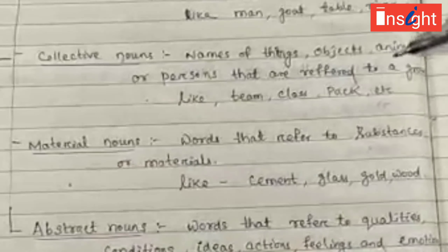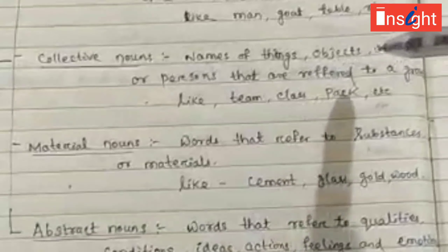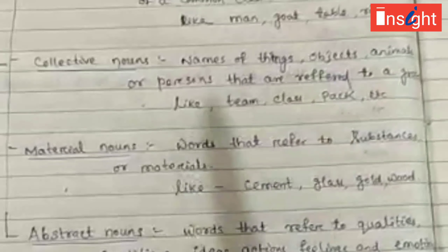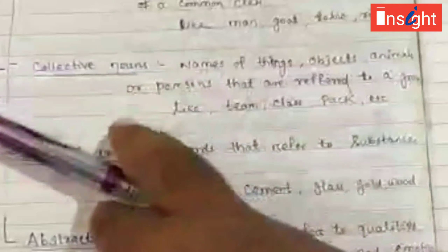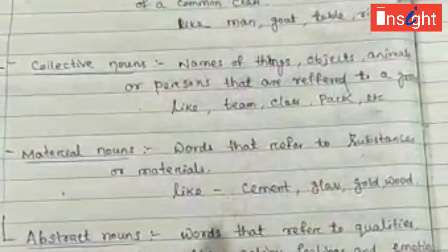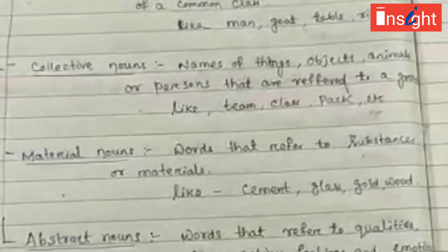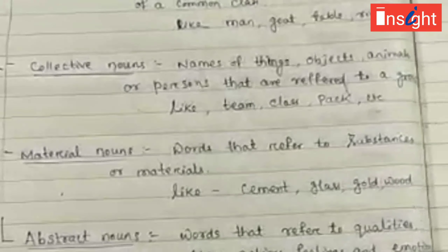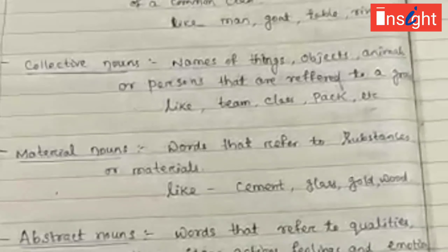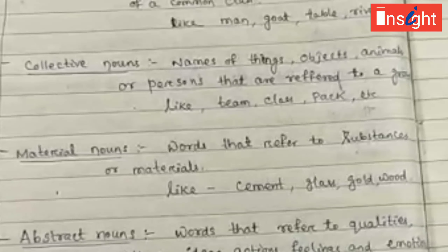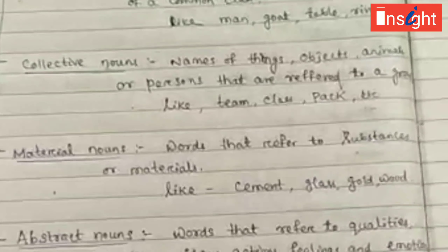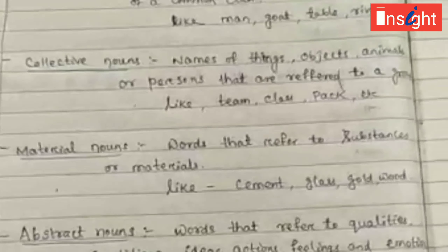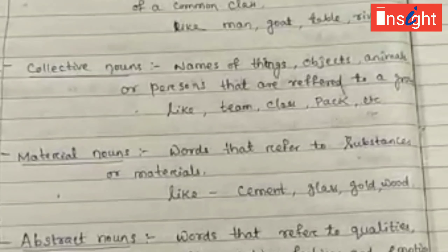Collective noun means it is the name of things, objects, animals, or persons referred to as a group. Examples include: pack — as in pack of wolves, team of players, and class of students.